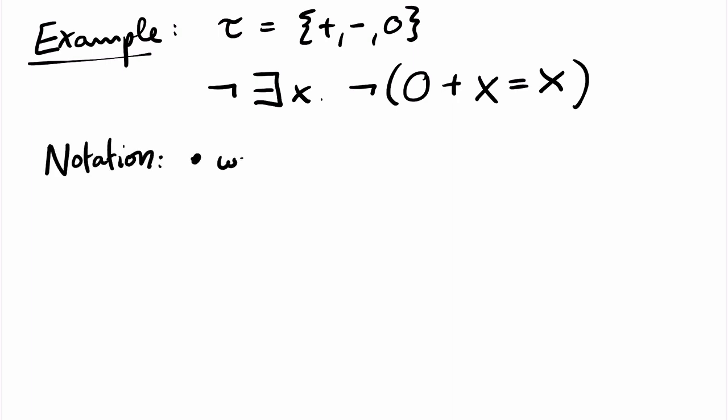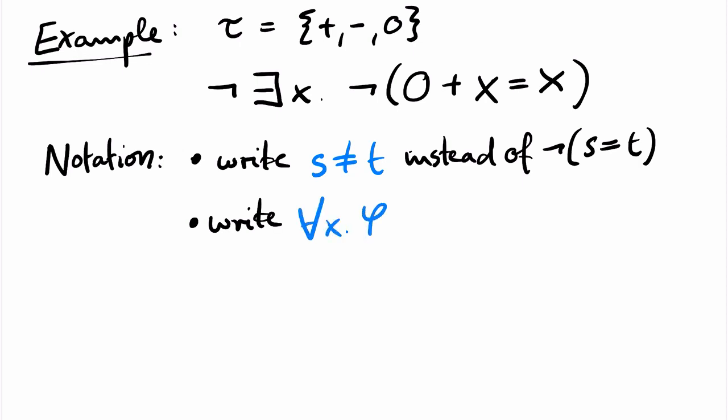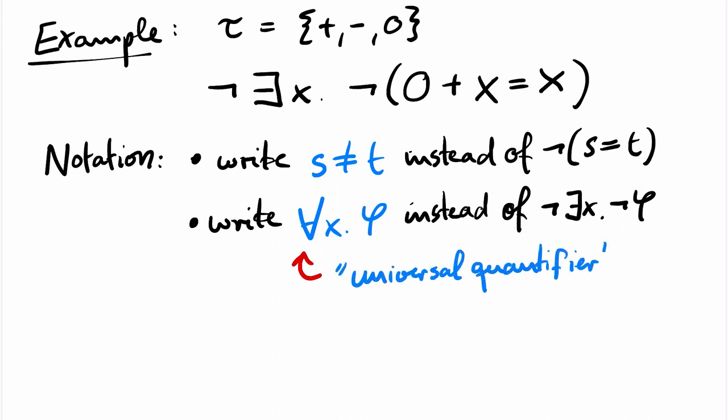We write s not equals t instead of not s equals t. We write for all x phi instead of not exists x not phi. And here the symbol A that is turned upside down is the so-called universal quantifier and we pronounce this formula for all x phi. So the formula above, from our example over the signature of groups, could be written as for all x, 0 plus x equals x. And this expresses a property of groups that you surely know. However, I have not yet defined the meaning of such formulas.